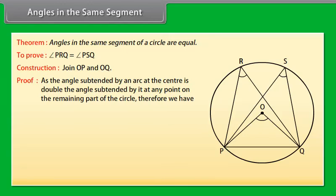Proof: As the angle subtended by an arc at the center is double the angle subtended by it at any point on the remaining part of the circle,